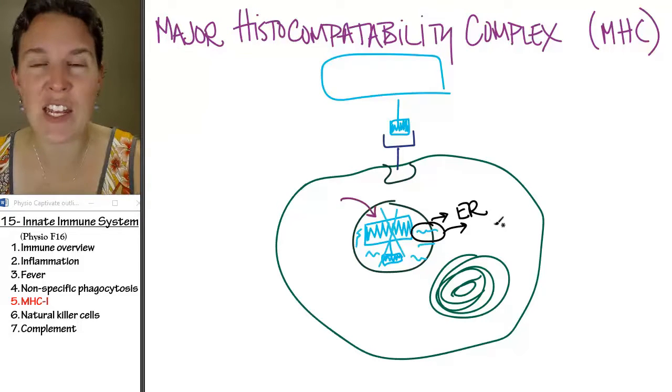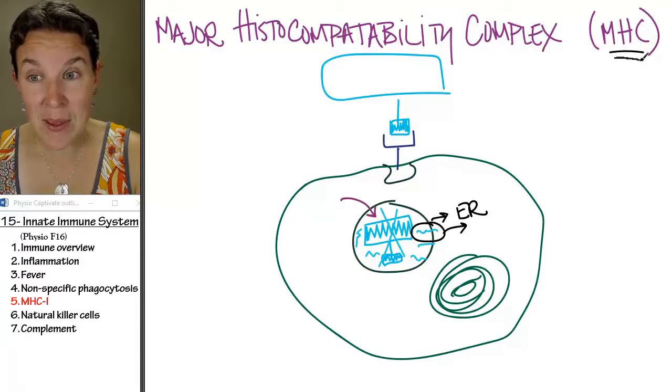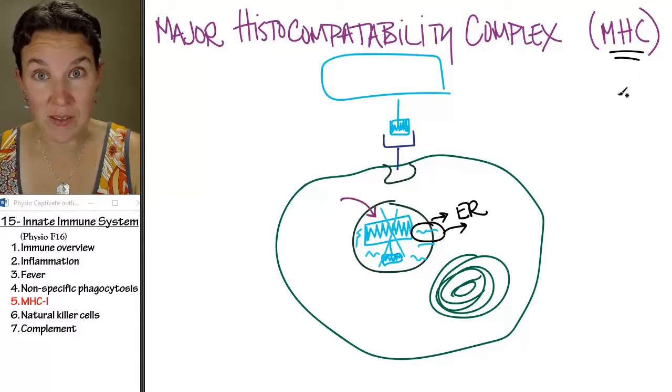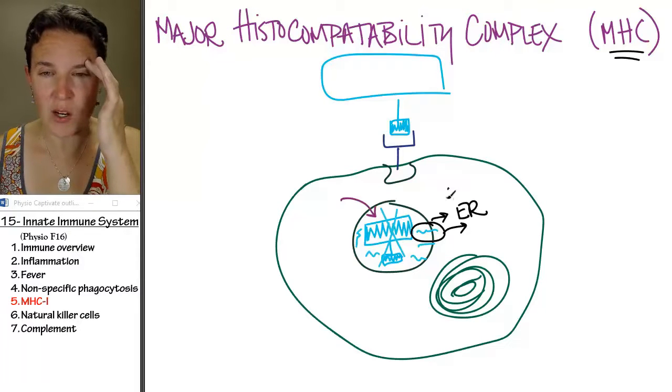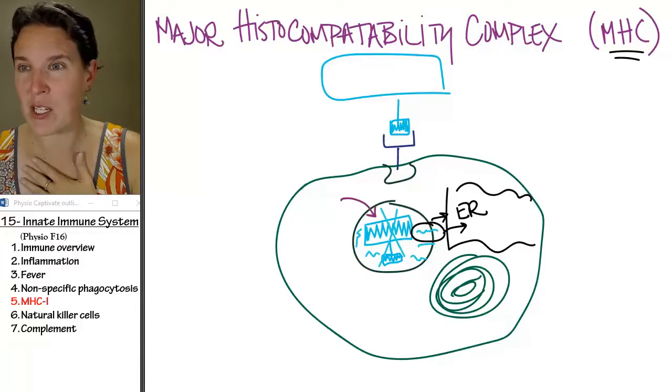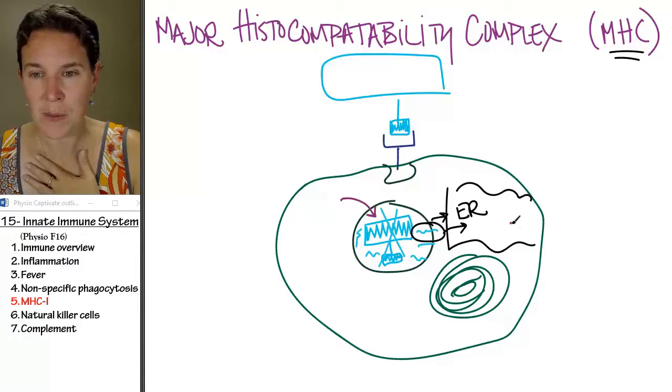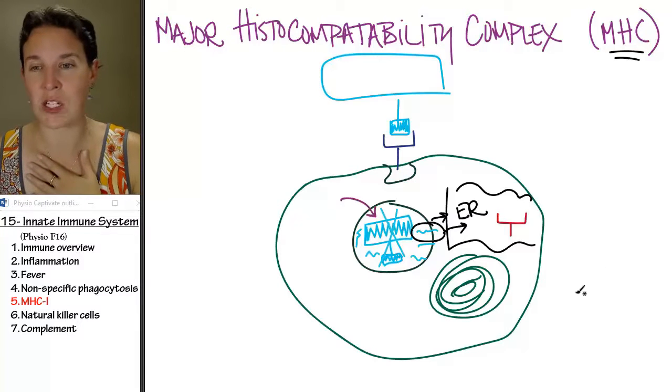Inside the endoplasmic reticulum are empty MHC platforms. So here we are. We have endoplasmic reticulum and we have an empty MHC platform, which surely must be this color. So this is kind of how I'm drawing my MHC platforms.